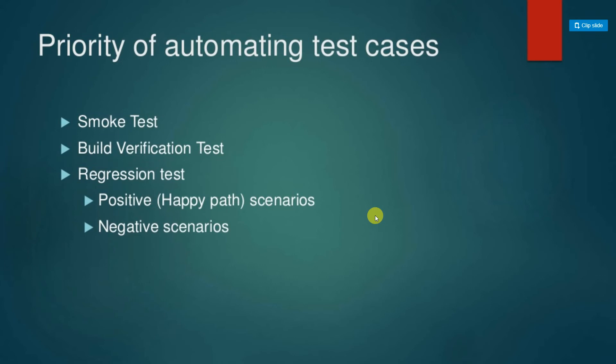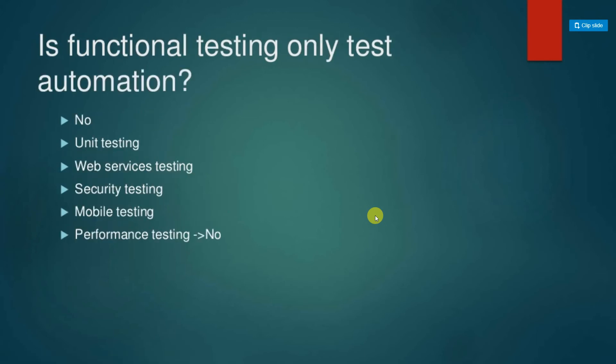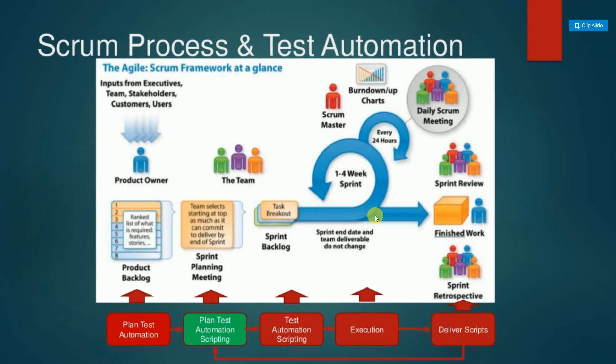The priority for test automation starts with smoke test automation and build verification testing, which only touch core functionality. Regression testing covers the entire application functionality, divided into positive and negative test scenarios. Functional automation is not limited to UI — it includes unit testing, web services testing, security testing, and mobility testing. Performance testing is a separate area in quality engineering and does not fall under test automation.